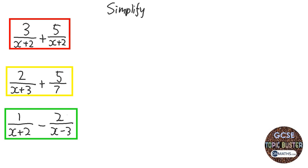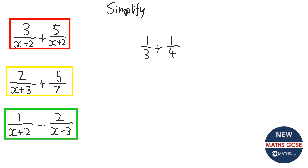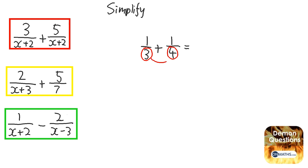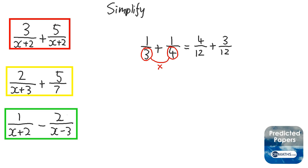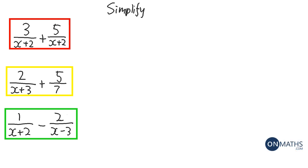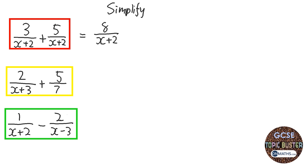Now we're going to add and subtract algebraic fractions. The best thing to do is think: what would you do if they were numbers? With a third plus a quarter, you make the bottoms the same. One method is multiplying them together to find the common denominator — it doesn't always give the smallest, but it always works. For the first question, the bottoms are already the same, so all we need to do is add the tops.